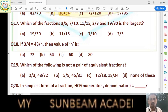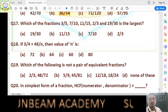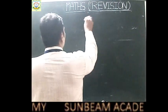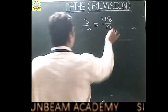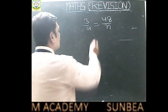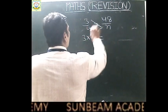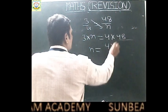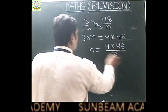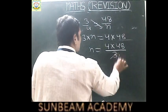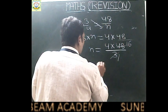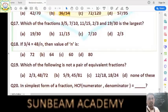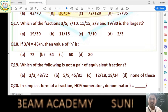Question number 18: 3/4 = 48/N; find the value of N. By cross multiplication: 3×N = 4×48. Transfer 3 to the other side — it divides: N = (4×48)/3 = 192/3 = 64. Wait, 48÷3=16, then 16×4=64. So N = 64. Answer is option B, that is 64.